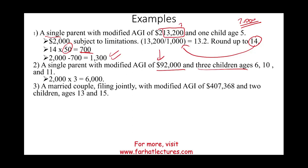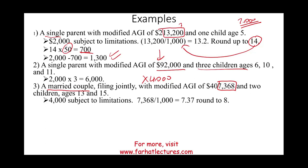Now let's look at a married couple filing jointly with a modified AGI of $407,368 and two children ages 13 and 15. If we were not above $400,000, this married couple would qualify for $4,000. But since we are above $400,000, we compute the limitation. We are $7,368 above the threshold. Divide by $1,000 — that's 7.37 — we always round up to 8. We take 8 multiplied by $50 and lose $400 from the credit.